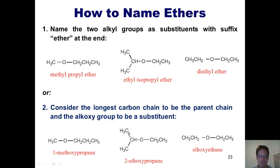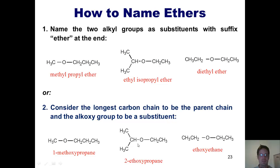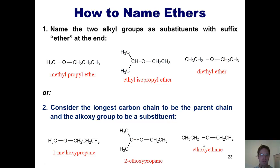Similarly, in the second example the longer chain is on the left — three carbons, so it's propane — and the oxygen with an ethyl group on the right is an ethoxy substituent attached to carbon 2, giving 2-ethoxypropane. In the third example, both chains are the same length, so we call one of them ethane and the other an ethoxy substituent, giving ethoxyethane. No number is needed here since the placement is completely unambiguous.